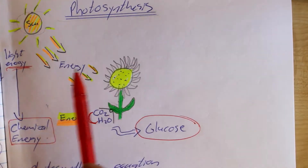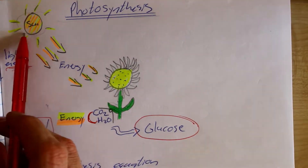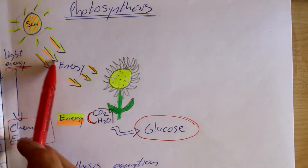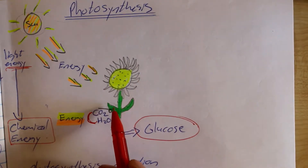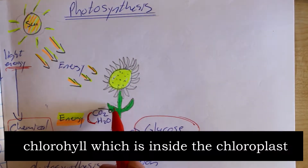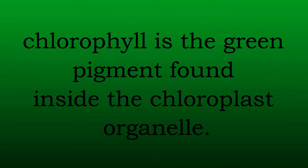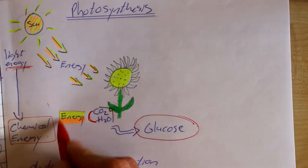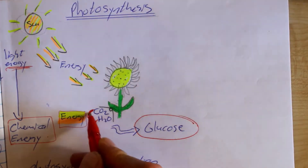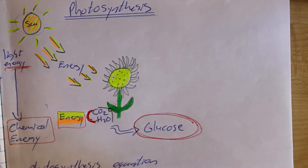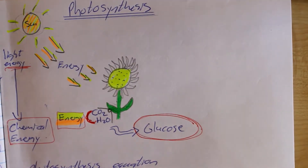Photosynthesis results in the conversion of light energy to chemical energy. Sunlight travels into our plant leaves and it gets absorbed by the chlorophyll organelles inside the cells of the leaf. This energy, when it's absorbed, is used to join carbon dioxide and water to form our glucose molecules. And this is how light energy gets converted to chemical energy.